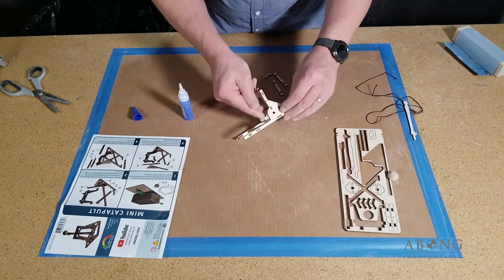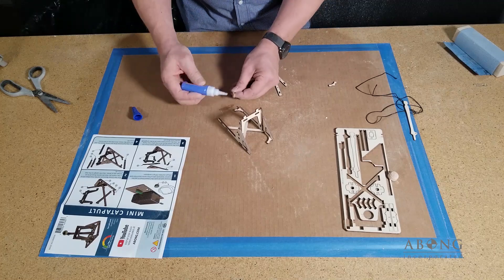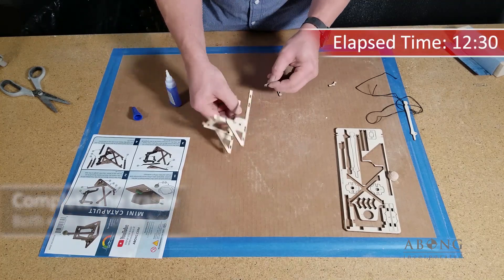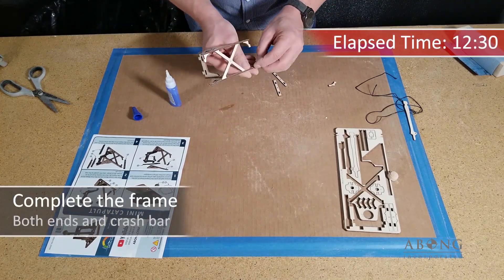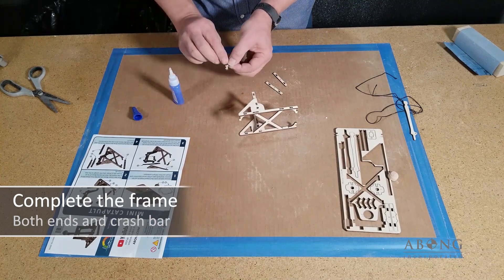And you want to make sure that the parts are fully inserted, all the way through, that all the tabs are fully inserted into the slots. And now I can go ahead and put those corner braces in. There we go. And the front one as well.